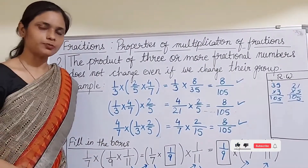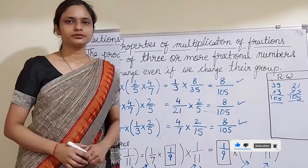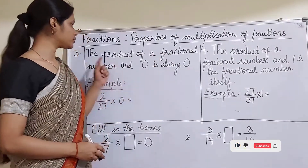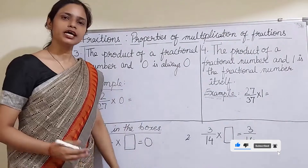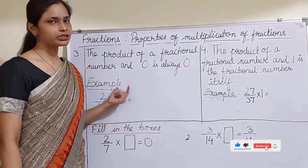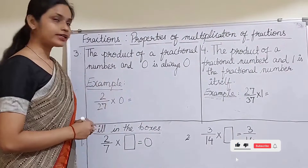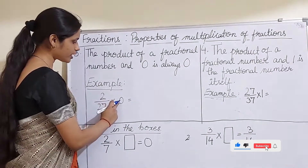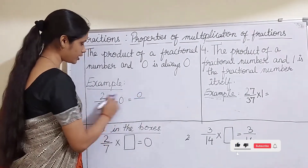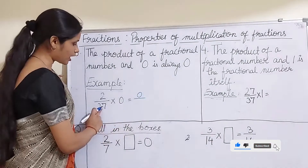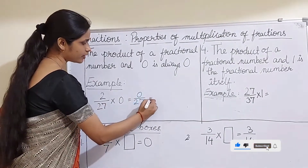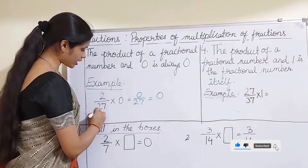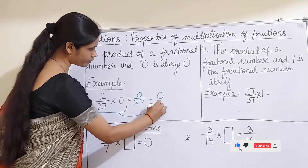Now let us understand the next property: the product of a fraction number and zero is always zero. If we multiply any fraction number by zero, the result will always be zero. For example, 2/27 multiplied by 0 — in the numerator we have 2 × 0 = 0, and in the denominator 27 × 1 = 27. Since 0 divided by 27 is zero, whenever a fraction is multiplied by zero the result is always zero.